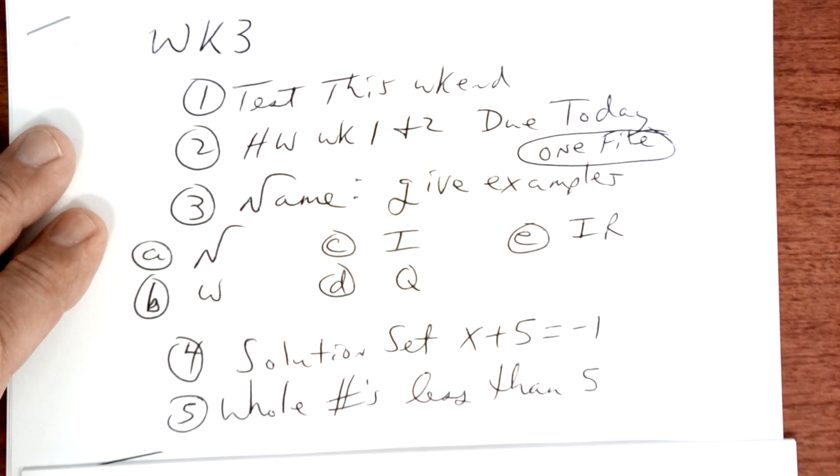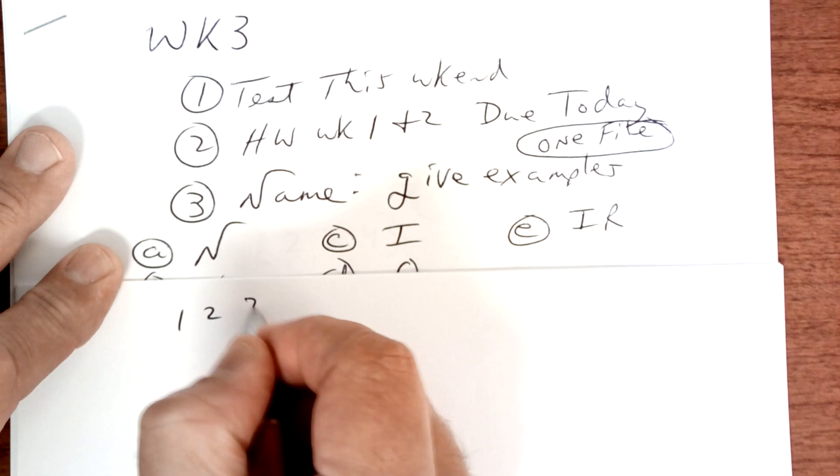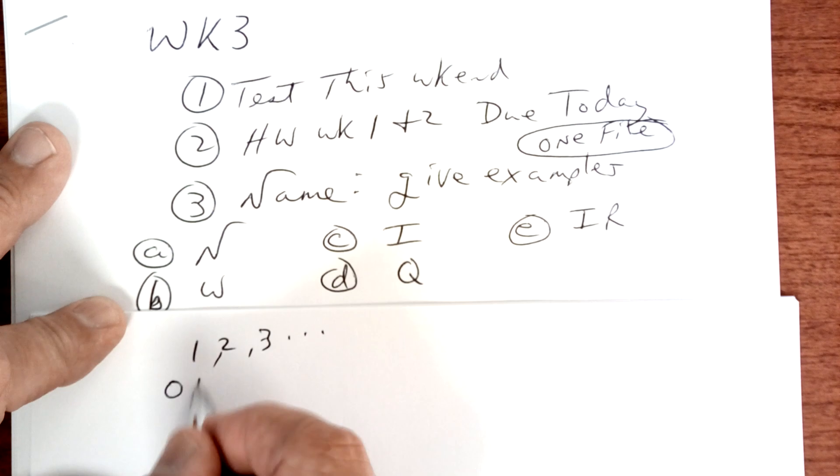Let's look here. What is a natural number? Well that's one, two, three, etc. What is a whole number? Zero, one, two, three, etc.